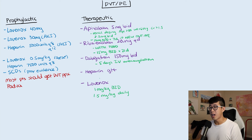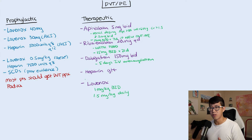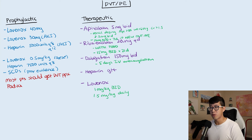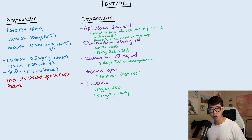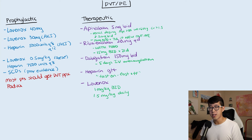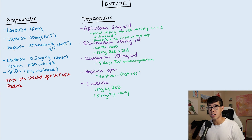One thing I like to ask learners: what is the advantage of using a heparin drip over all these other options? The key advantage is that it is fast on and fast off. When you start it, the patient becomes anticoagulated quickly, but if they start bleeding or have a procedure coming up, you can immediately stop it and their anticoagulation will essentially be gone within a few hours.